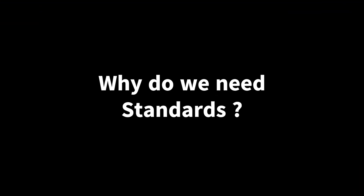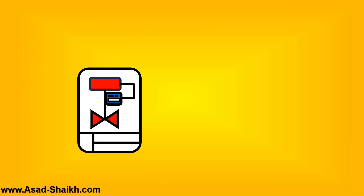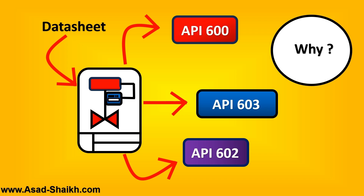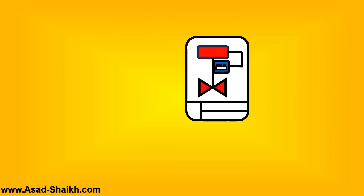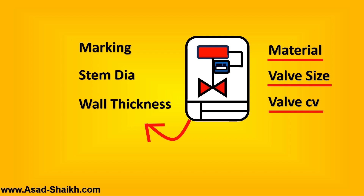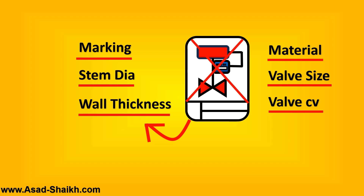Before that, let us clarify an important point. A lot of people ask: in a data sheet, why should we mention any of these standards? In a data sheet we already mention important details like the material required, the valve size, and the valve Cv. So why do we need standards? The reason is that we don't go in depth on the marking system, stem diameter, wall thickness required for the valves, etc. These details are important and are not covered in the data sheet.